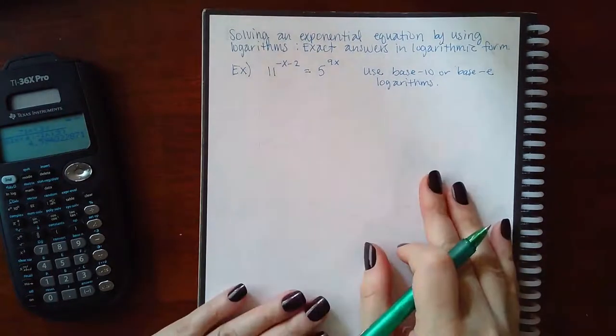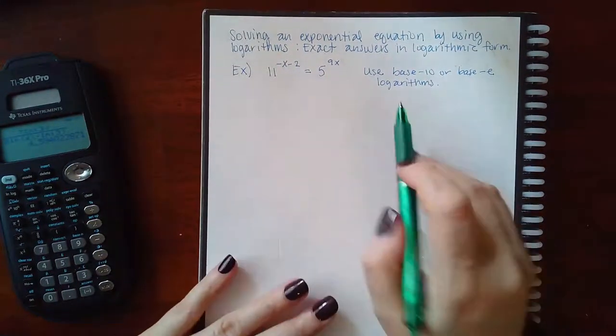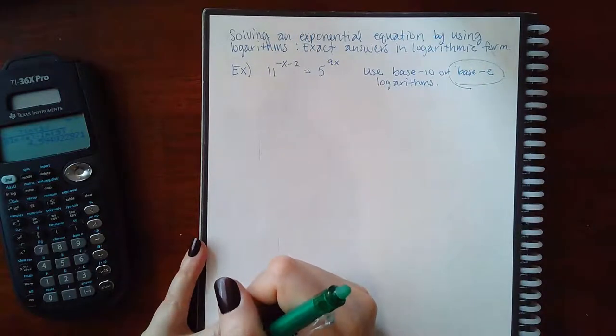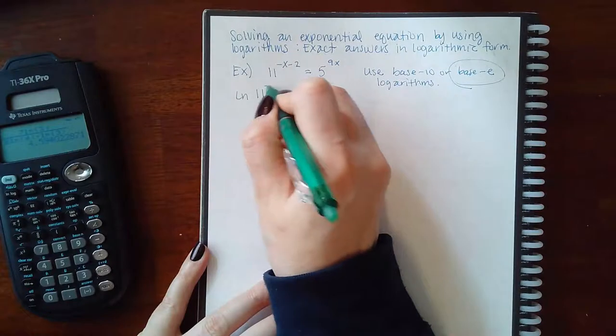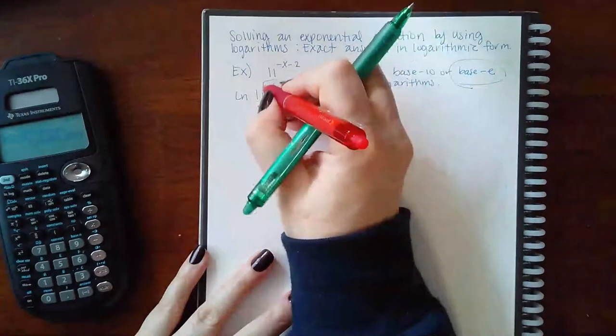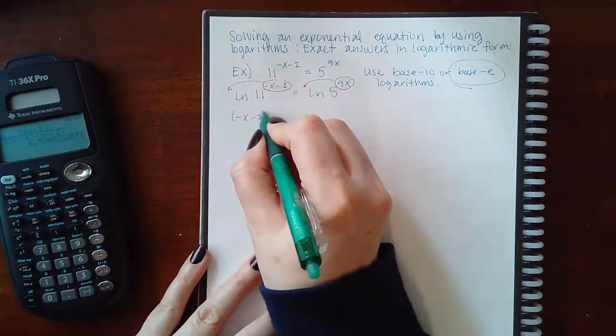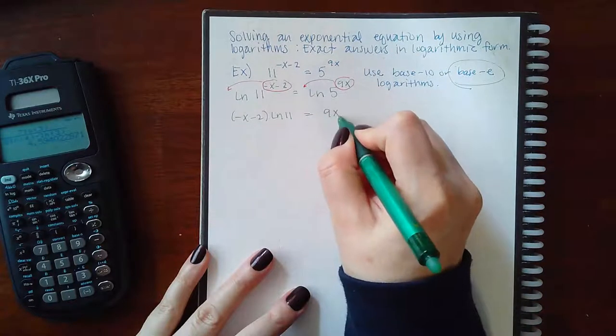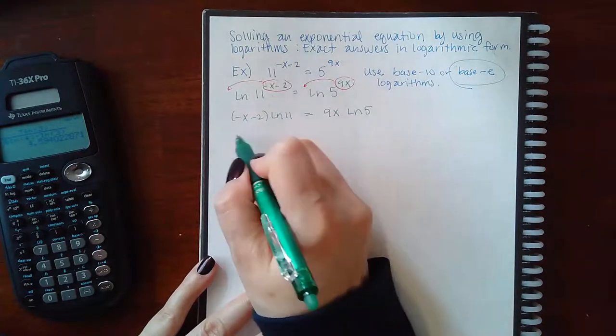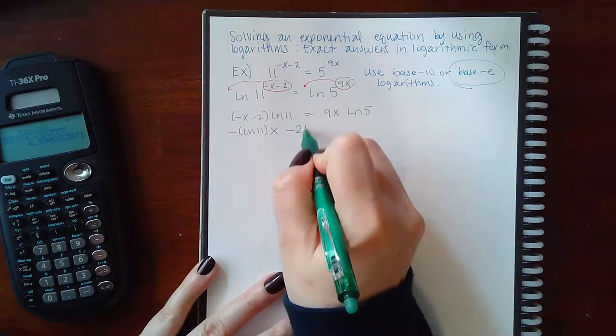Now here we're solving another problem. This one wants you to keep it in exact answers. So we don't have to keep putting things in the calculator. And it's specifically telling you use base 10 or use base E. Again, you already know my style. I like to use base E all the time. So I'm going to take the natural log on the left hand side. And I'm going to take the natural log on the right hand side. So then this exponent is going to come down to the front. This exponent is going to come down to the front. So I have negative X minus 2 times the LN of 11. And then I have 9X times the LN of 5. Then I'm going to distribute this LN. So it's going to be negative LN of 11, some decimal number, times X, minus 2 times LN of 11. On this side, I'm going to multiply those two numbers together to get my coefficient of X.